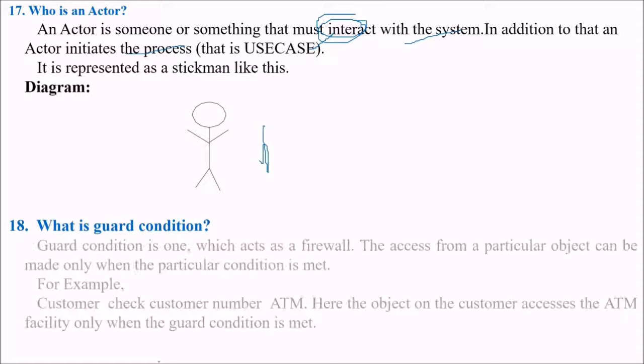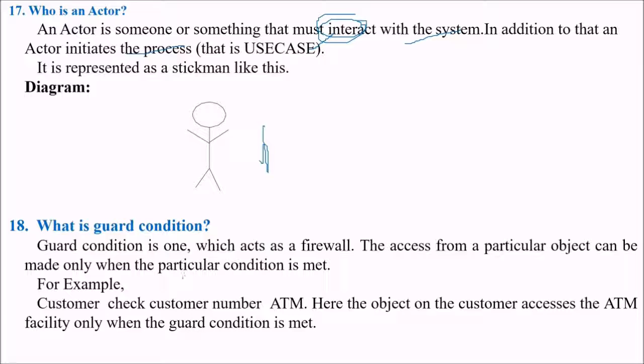What is a guard condition? Guard condition is one which acts as a firewall. The access from a particular object can be made only when the particular condition is met. For example, customer check customer number ATM. Here the object on the customer accesses the ATM facility only when the guard condition is met. If your pin is right then only you can access the information or money.